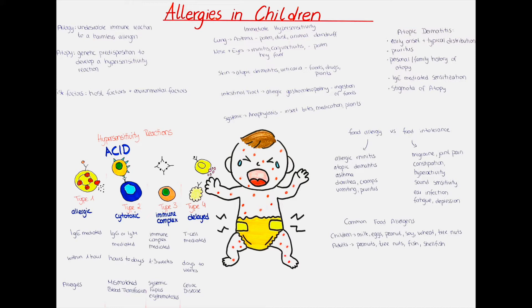The type 1 hypersensitivity is the one that is usually responsible for allergies. The immune cells responsible for this type are immunoglobulins of the type E, which bind the mast cells on their Fc receptor. When the specific allergen binds to the IgE antibody, it initiates degranulation of the mast cells and so the release of histamine. This type has an onset of reaction within one hour.